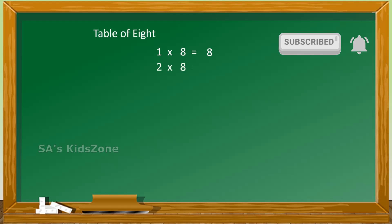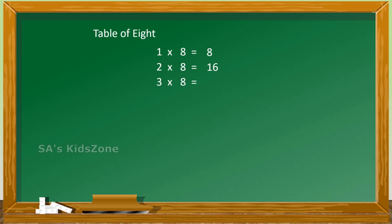2 eights are 16, 3 eights are 24, 4 eights are 32, 5 eights are 40, 6 eights are 48.